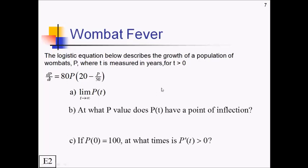For our next and last example, we're going to do a little wombat fever here. We have a logistic equation below describing the growth of a population of wombats, P, where T is measured in years, and this is only for T values greater than zero. And they want us to figure out the following items based off of this. We want to know the limit as T approaches infinity of P, at what P value P of T has a point of inflection, and if P of zero equals 100, at what times is P of T greater than zero? So first thing to realize is we are not in our standard kP times M minus P form. We're pretty close. We have some constant times a P, and we have some number minus something with a P, but the P isn't by itself. This isn't just P. This is P over 50.